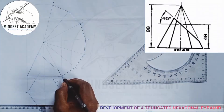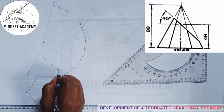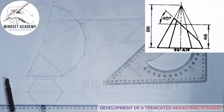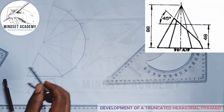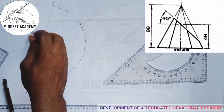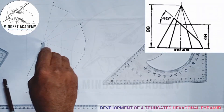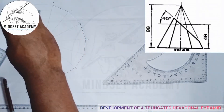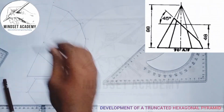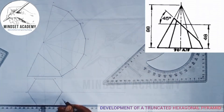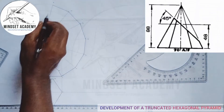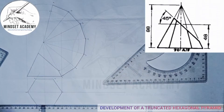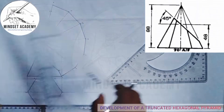Now if I have point one here, I'll take my compass from the apex point to point one and draw a semicircular arc. Where the arc touches the development arc on each side, those are my point-one positions. So we now have point one marked on each side.